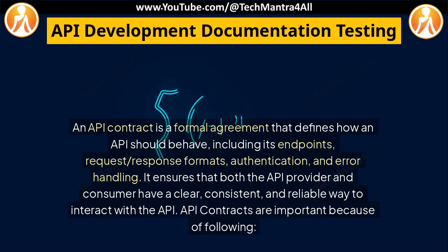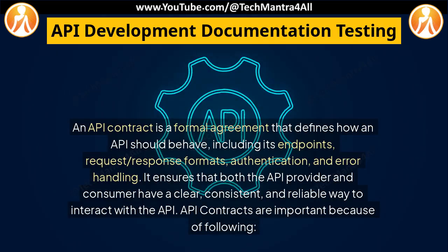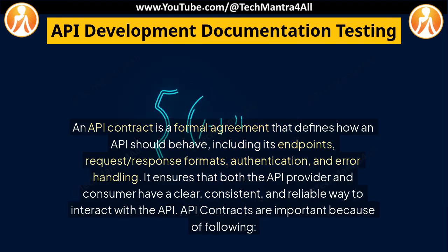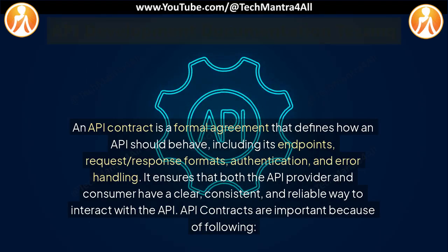An API contract is a formal agreement that defines how an API should behave, including its endpoints, request/response formats, authentication, and error handling. It ensures that both the API provider and consumer have a clear, consistent, and reliable way to interact with the API. API contracts are important for the following reasons.